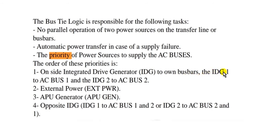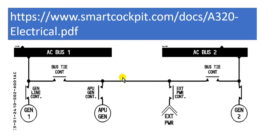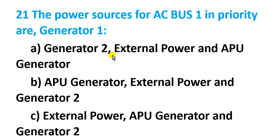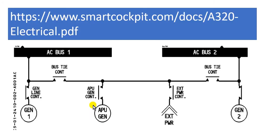The order of priorities is: number one, the onsite integrated drive generator IDG — IDG one to bus one, IDG two to bus two — then external power, then the APU. So the external power has priority over the APU. The correct answer begins with external power.